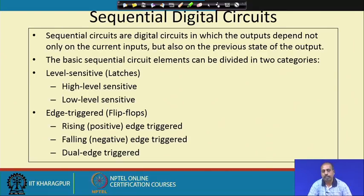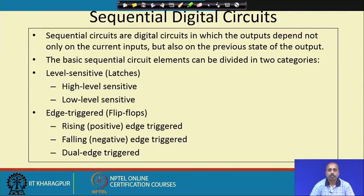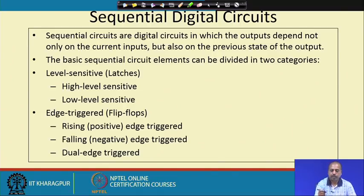Sequential circuits can be divided into two categories: level sensitive and edge triggered. Level sensitive means we are interested in the operation of the circuit during some interval of time, whereas edge triggered means we want it at some precise instant of time. In sequential circuits there is a special signal commonly known as the clock signal.